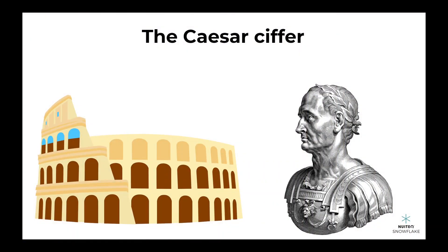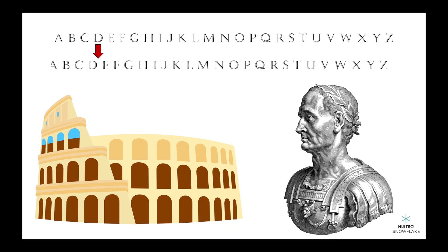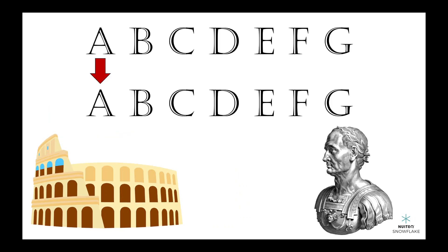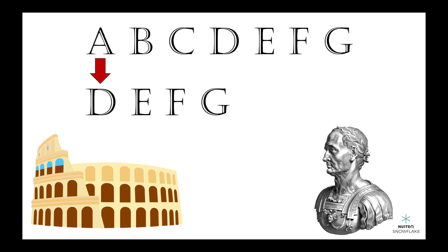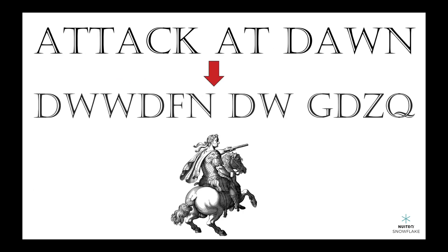One famous example of encryption is the Caesar Cipher, named after the famous Roman Emperor Julius Caesar. He used to send secret messages to his generals by shifting each letter of the alphabet a certain number of places. For example, if he shifted the letters by three places, the letter A would become D, B would become E, and so on. So if he wanted to say "attack at dawn," he would write D, W, W, D, F, and D, W, G, D, Z, Q instead. Pretty clever, huh?